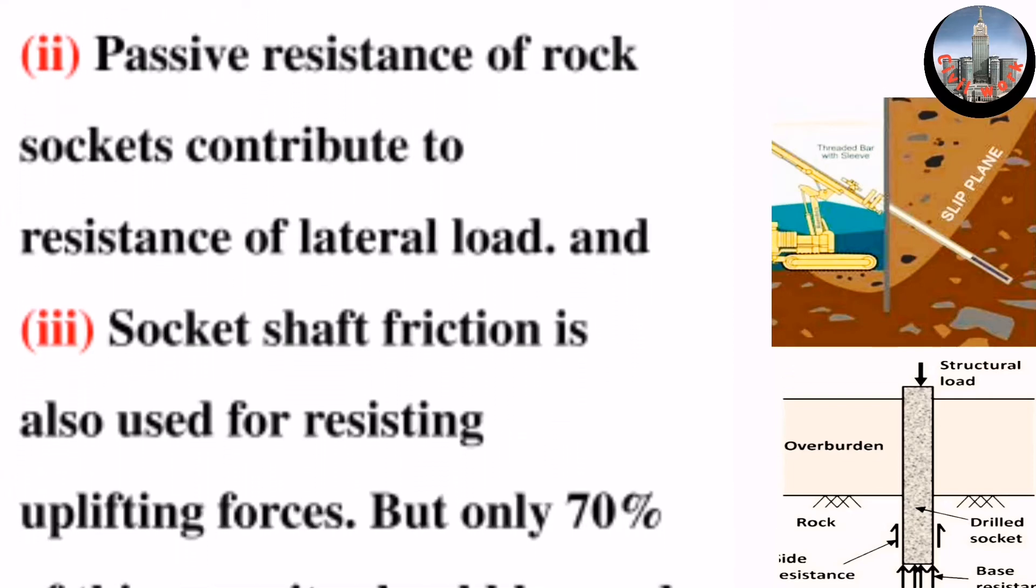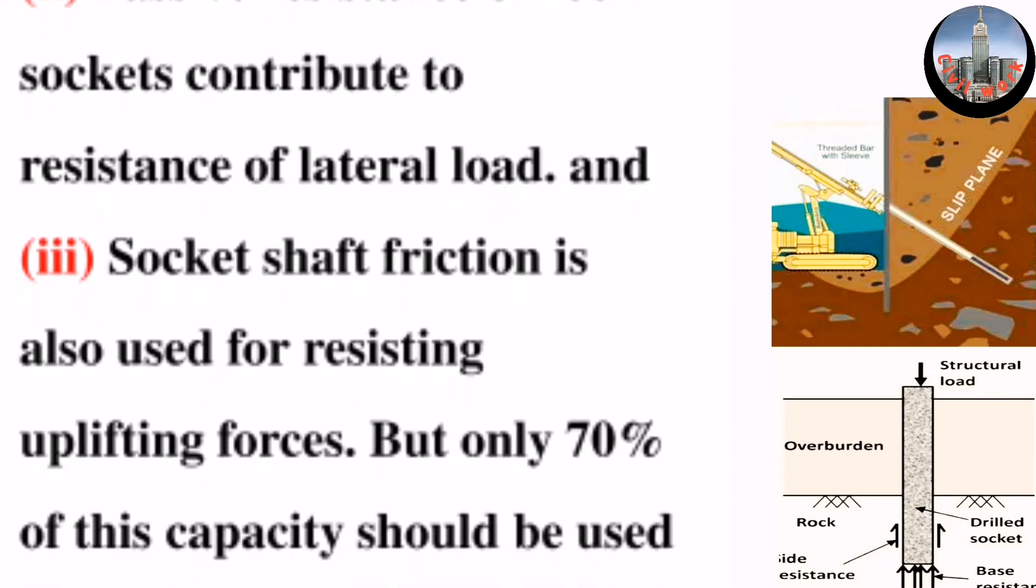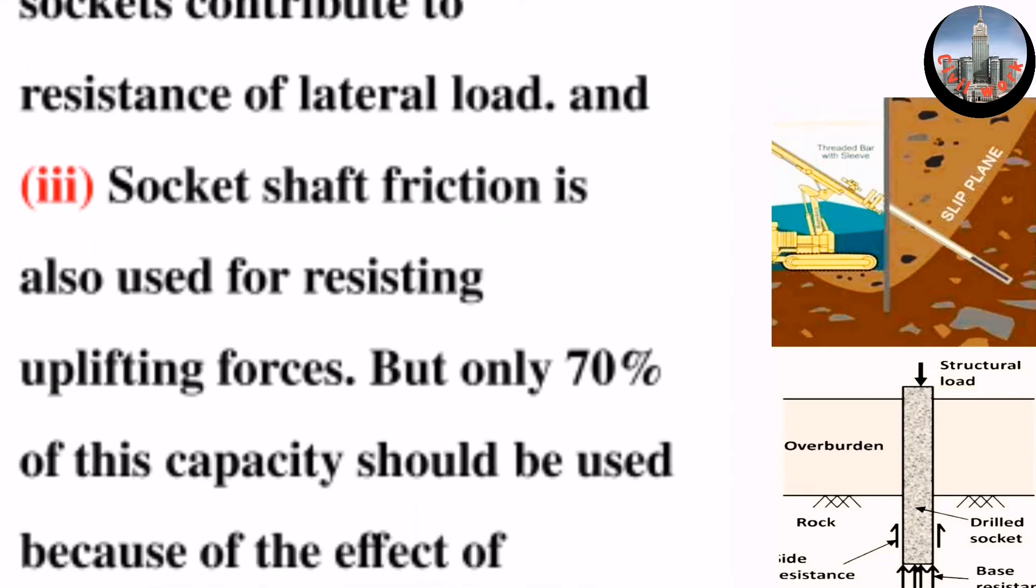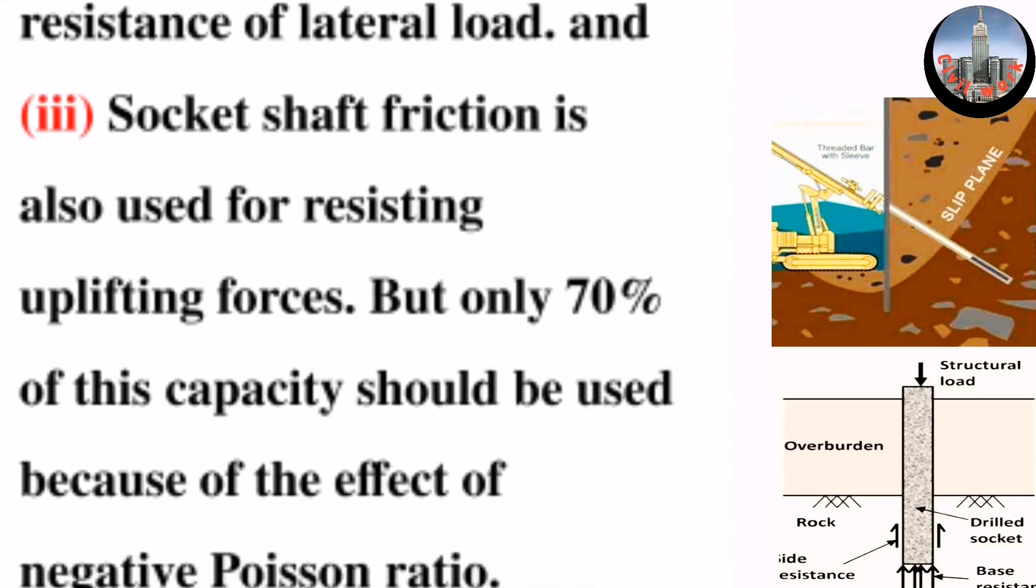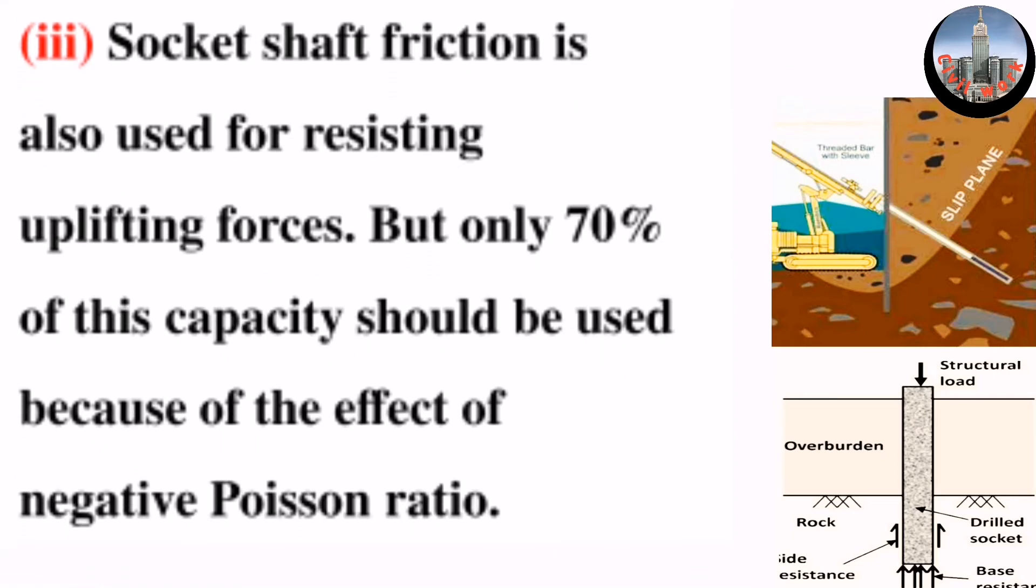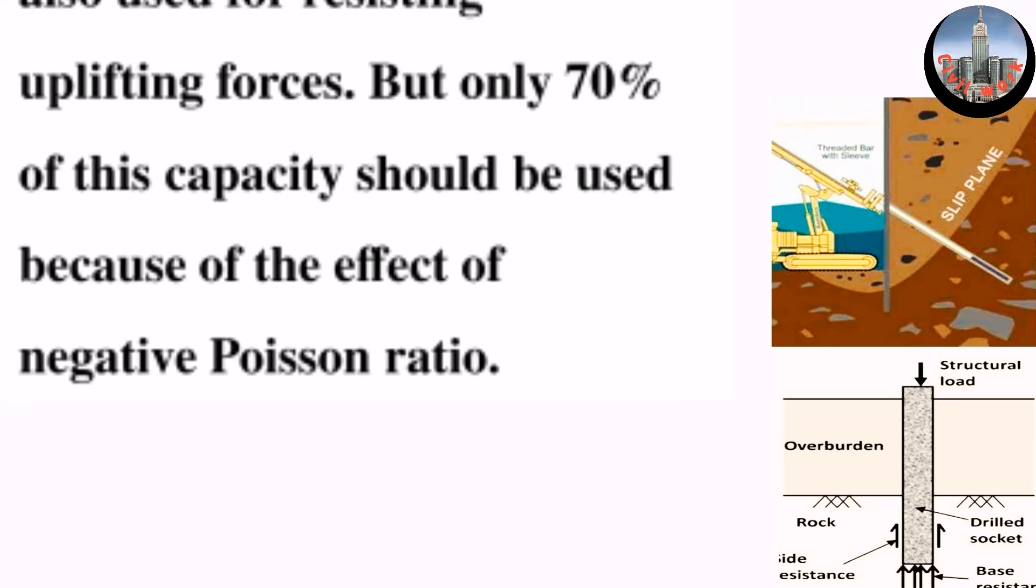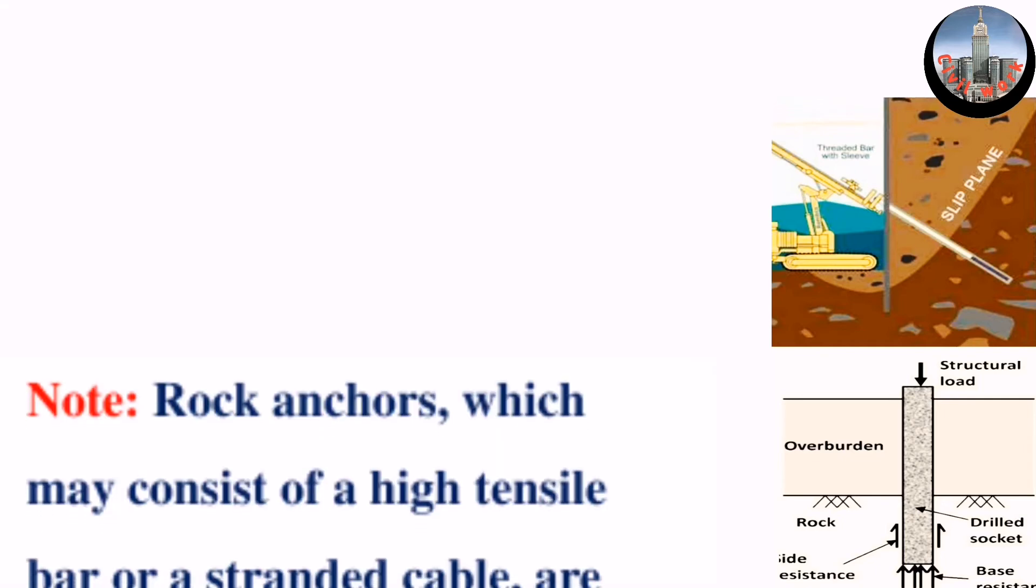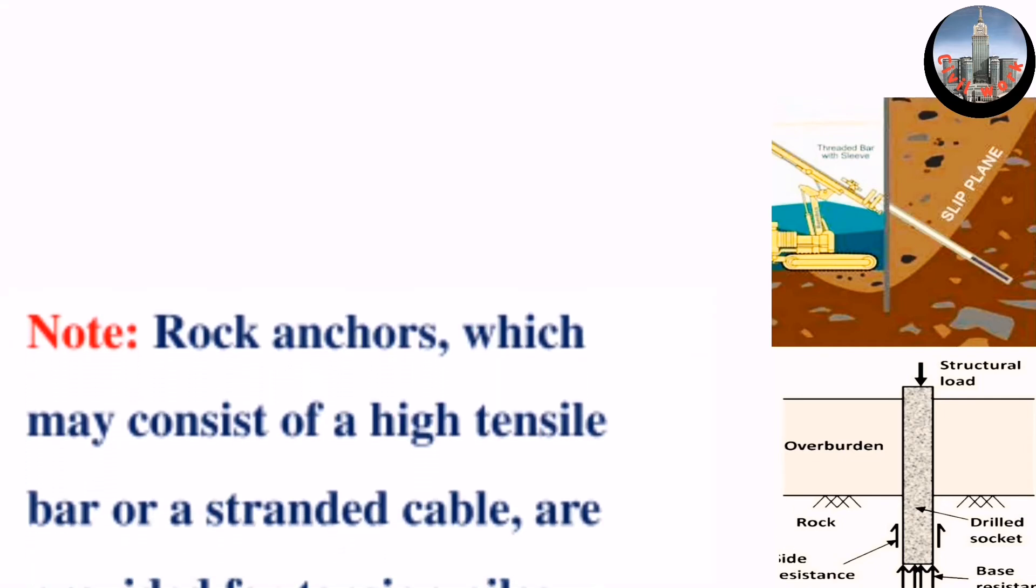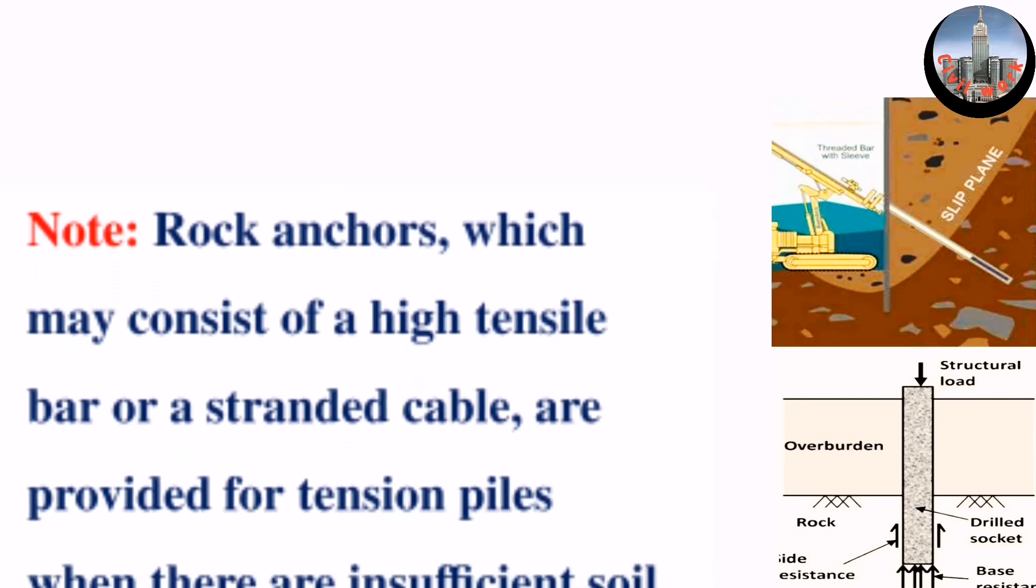(3) socket shaft friction is also used for resisting uplifting forces, but only 70% of this capacity should be used because of the effect of negative Poisson ratio. Note: Rock anchors, which may consist of a high tensile bar